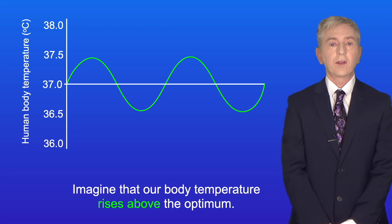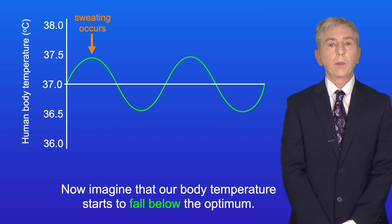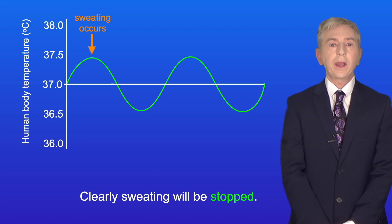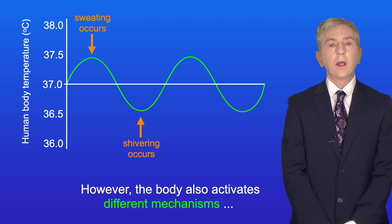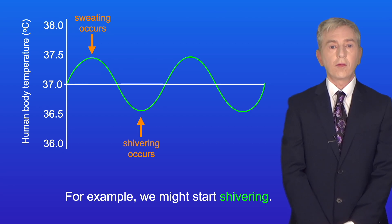Imagine that our body temperature rises above the optimum. This triggers mechanisms to reduce body temperature, for example sweating. Now imagine that our body temperature starts to fall below the optimum. Clearly sweating will be stopped. However, the body also activates different mechanisms which actively increase body temperature back towards the optimum. For example, we might start shivering.